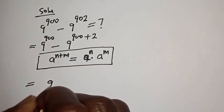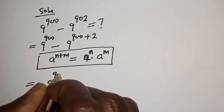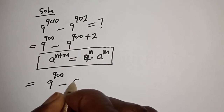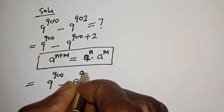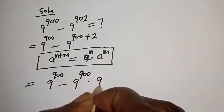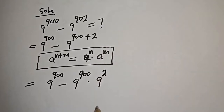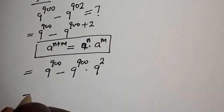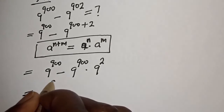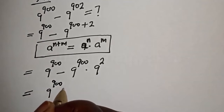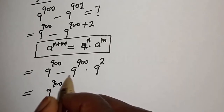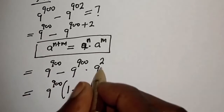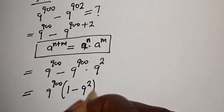So 9 raised to power 900 minus 9 raised to power 902 becomes 9 raised to power 900 minus 9 raised to power 900 multiplied by 9 raised to power 2. Since 9 raised to power 900 is common, we bring it out, leaving 1 minus 9 raised to power 2.